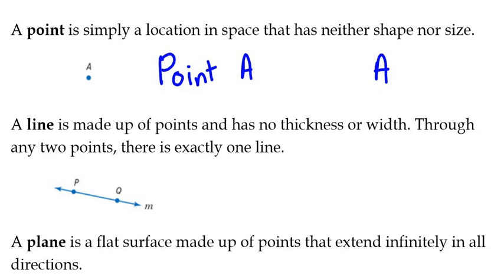Second undefined term is a line. A line is made up of points and has no thickness or width. It extends in two directions without bound. Without bound. It extends infinitely. So if we look here at this line here, it extends in opposite directions without end. And the points P and Q are on the line. We also have this lowercase italicized M here. Let's talk about how to name this line here. There are a couple different ways we can name this line here. We can name it by points on the line.